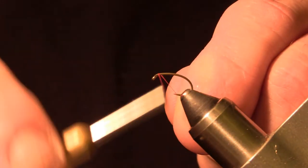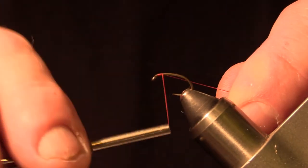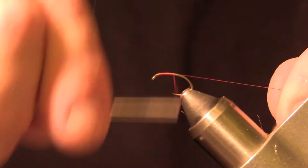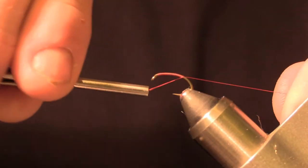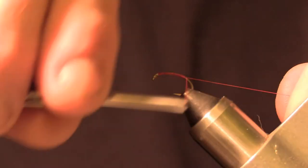We'll start the thread right behind the hook eye. Wrap it deep into the bend.